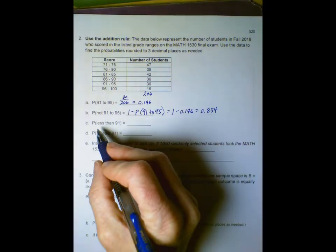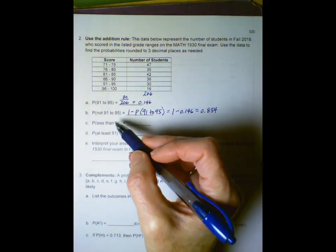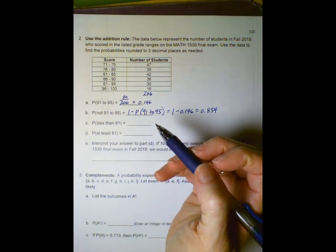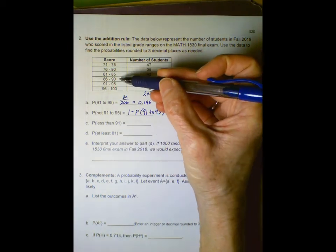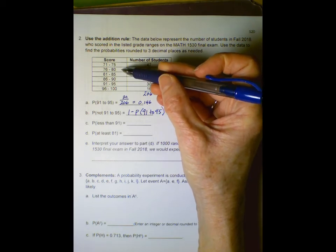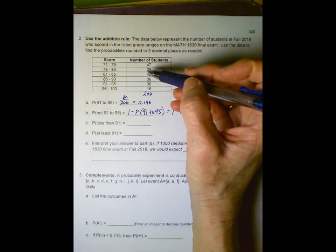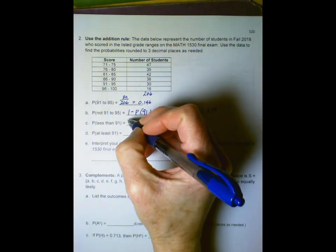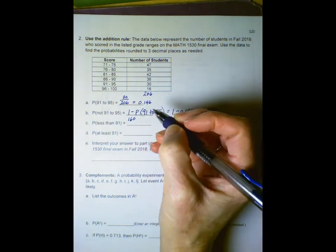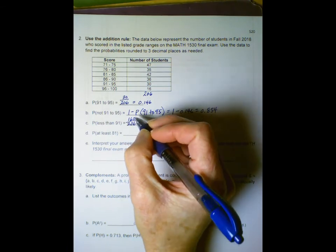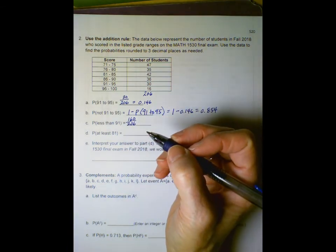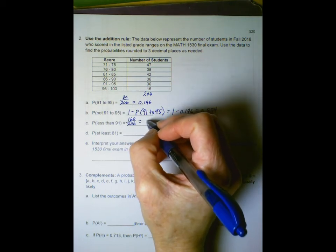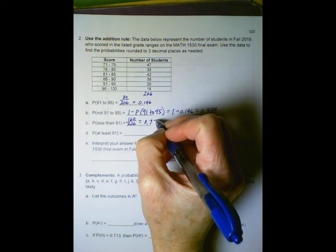Part c: find the probability that a student in this group scored less than 91. Which categories are less than 91? It's the top four classes. If we add up the top four classes, we get 160 relative to the total, so we get a probability of 0.777.